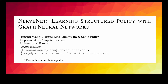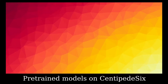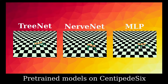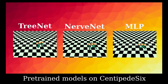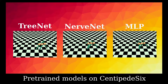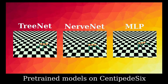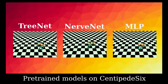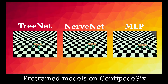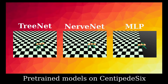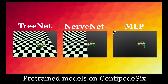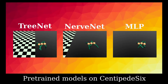NerveNet – Learning Structured Policy with Graph Neural Networks. To test the transferability of the reinforcement learning agents, we pre-train different models on Centipede 6 and do zero-shot evaluations on Centipedes with more legs. The Centipedes are trained to run as fast and far as possible.